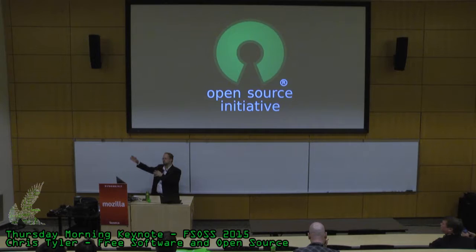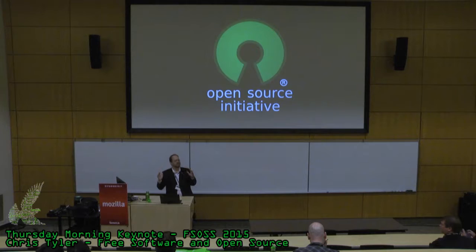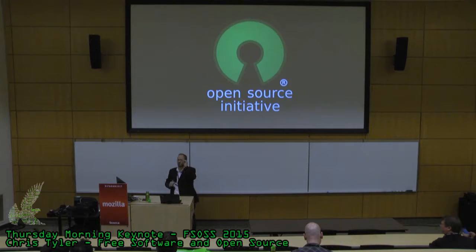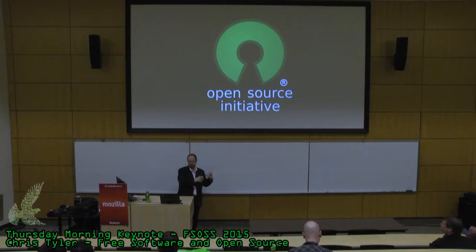So three eras: the era of software sharing, where stuff was just put in the public domain without a legal framework; the free software movement, which developed licensing and a legal framework to protect freedoms and give the concept a name; and then the open source initiative, which built on those concepts, moved away from some of the high rhetoric, added an emphasis on business use, collaboration, software development methodologies, and the production of quality software.